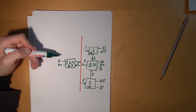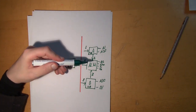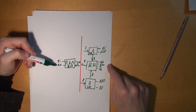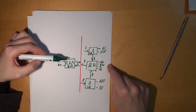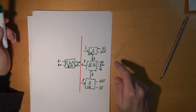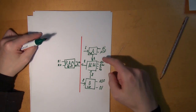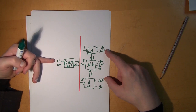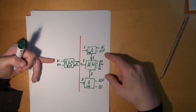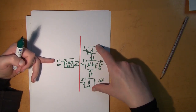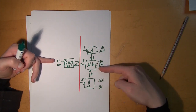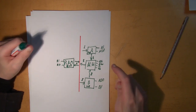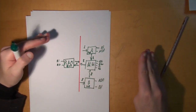If RAM input is enabled, the RAM can be written to — whatever is on the bus is written to the RAM. When RAM output is enabled, the RAM outputs something to the bus. For example, we could have ABO set to 1, RAM input set to 1, and ALU enable set to 1, which would cause the two numbers to be fed into the ALU, and it would cause the ALU to output a number which would then be written into the RAM.